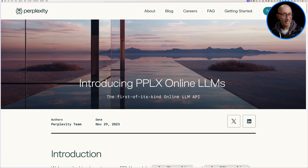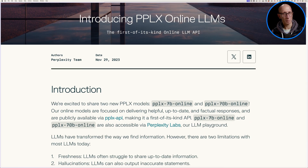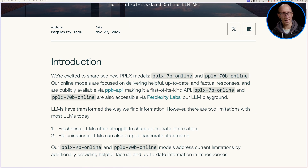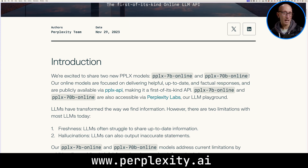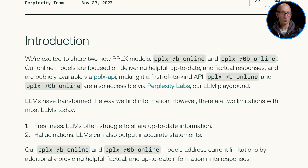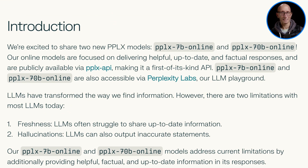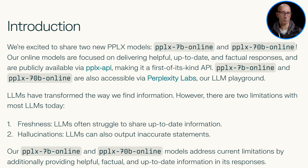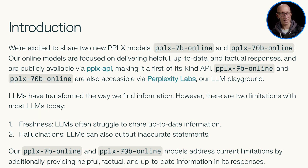One of the weaknesses of LLMs out of the box is that they don't know anything about recent events. I was excited to come across this blog post by Perplexity AI about online LLMs. They've introduced two new models — 7B online and 70B online — that aim to give helpful, up-to-date factual responses. Going down a bit, they point out the problems with LLMs in general with freshness and hallucinations.